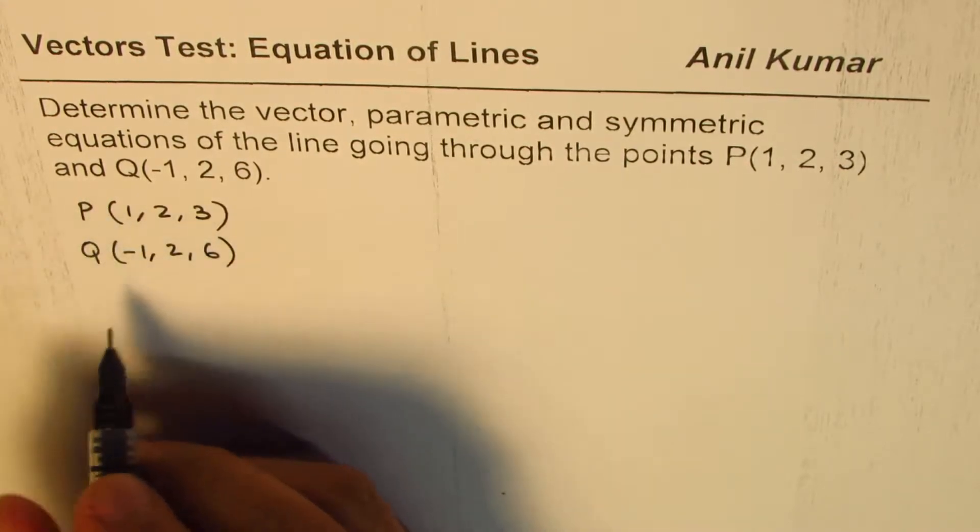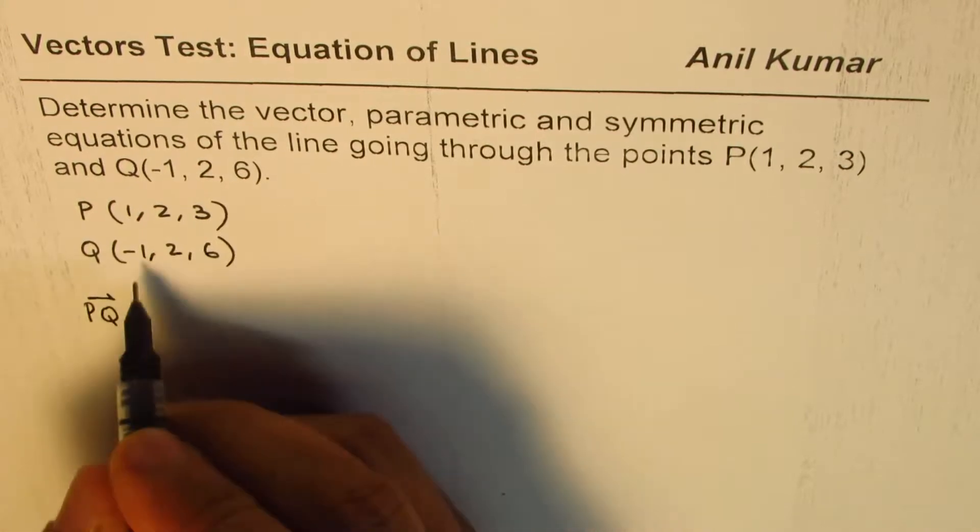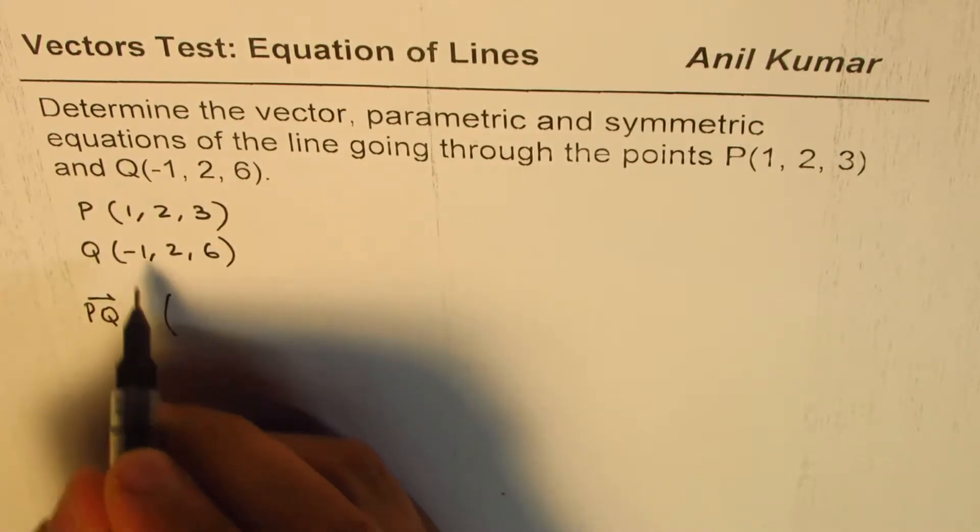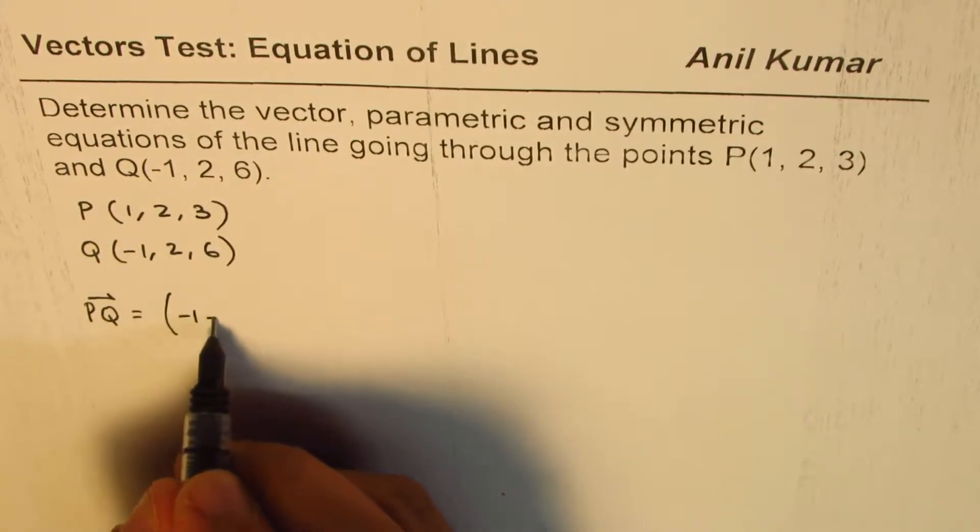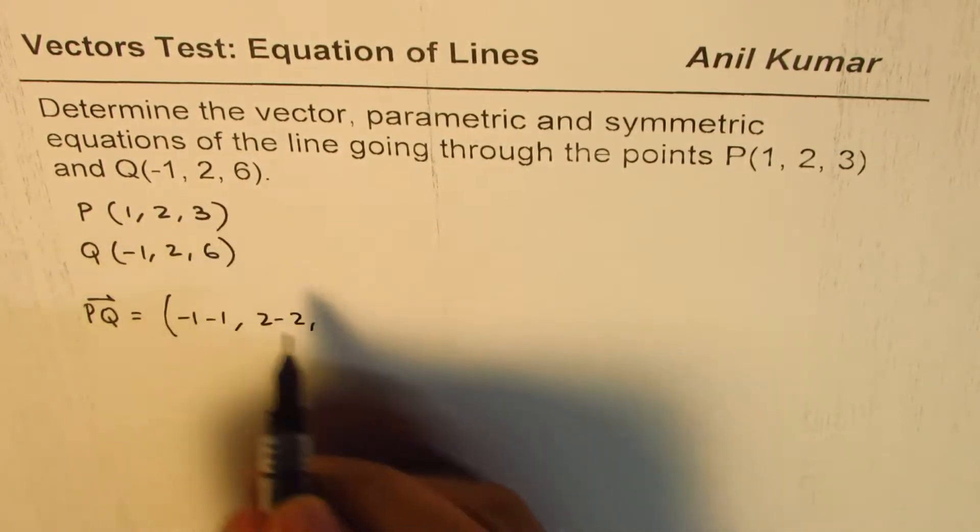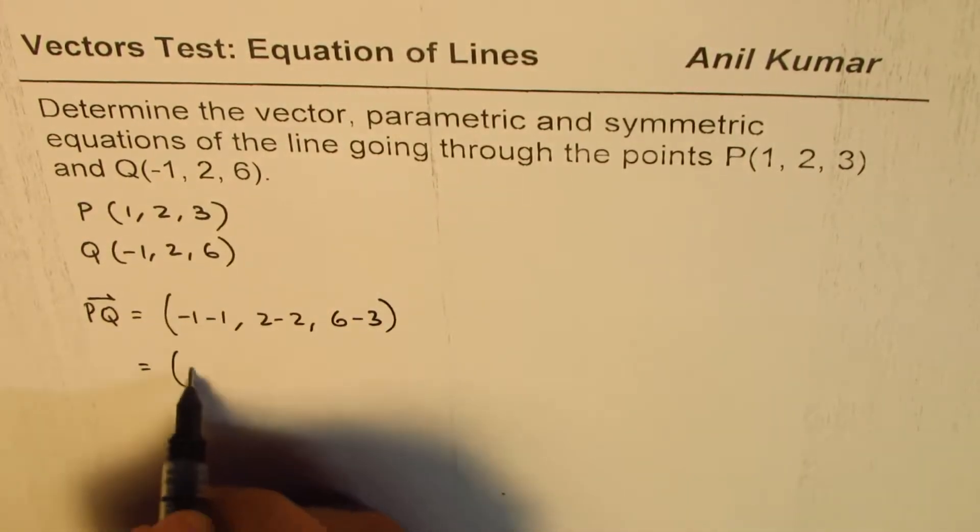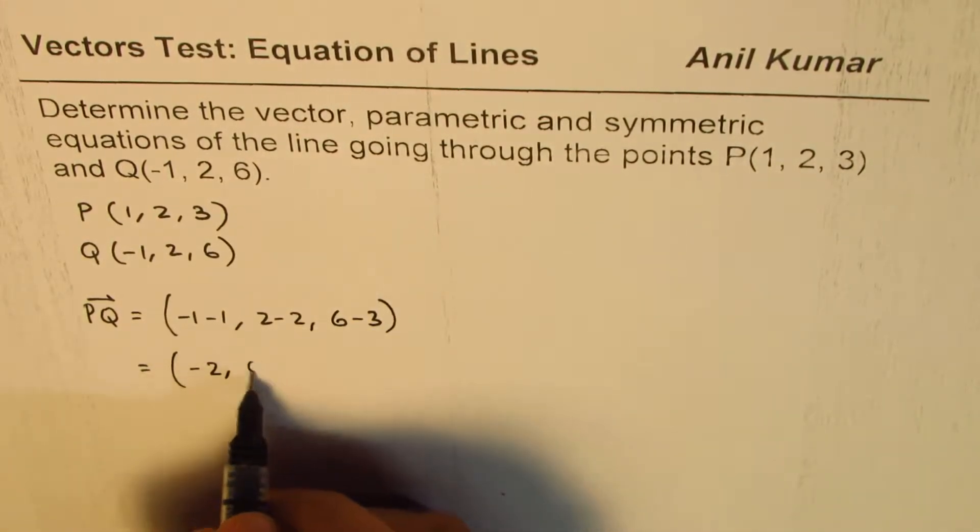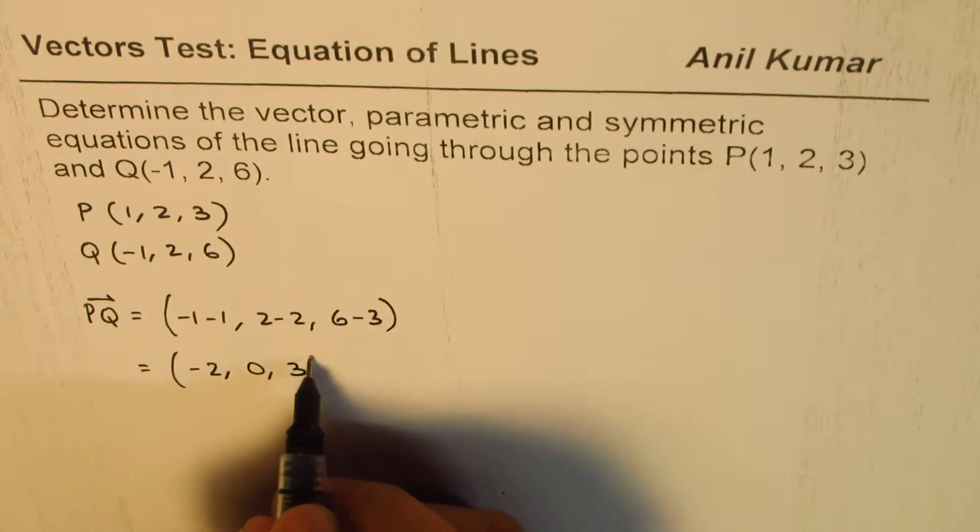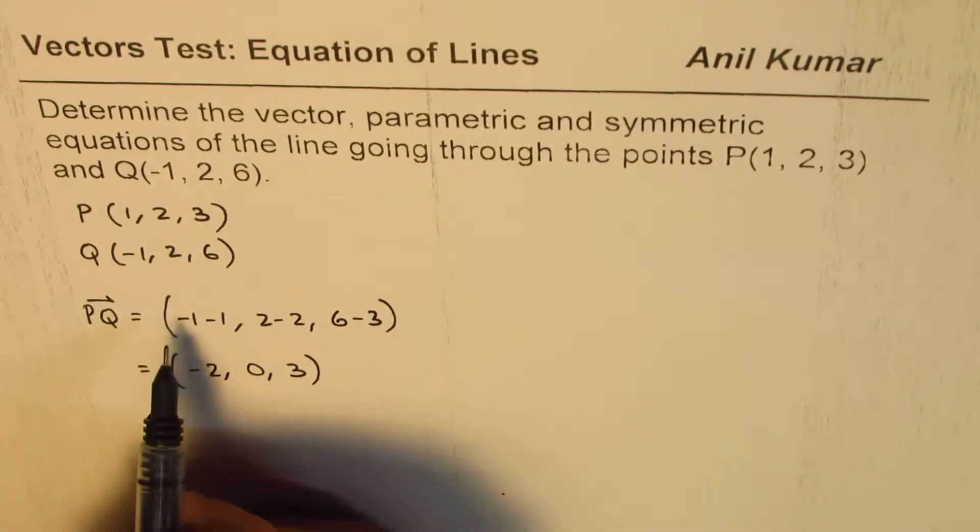We can find the direction between the two, PQ. So PQ will be -1 minus 1, 2 minus 2, 6 minus 3, which is (-2, 0, 3). So that becomes the direction vector PQ.